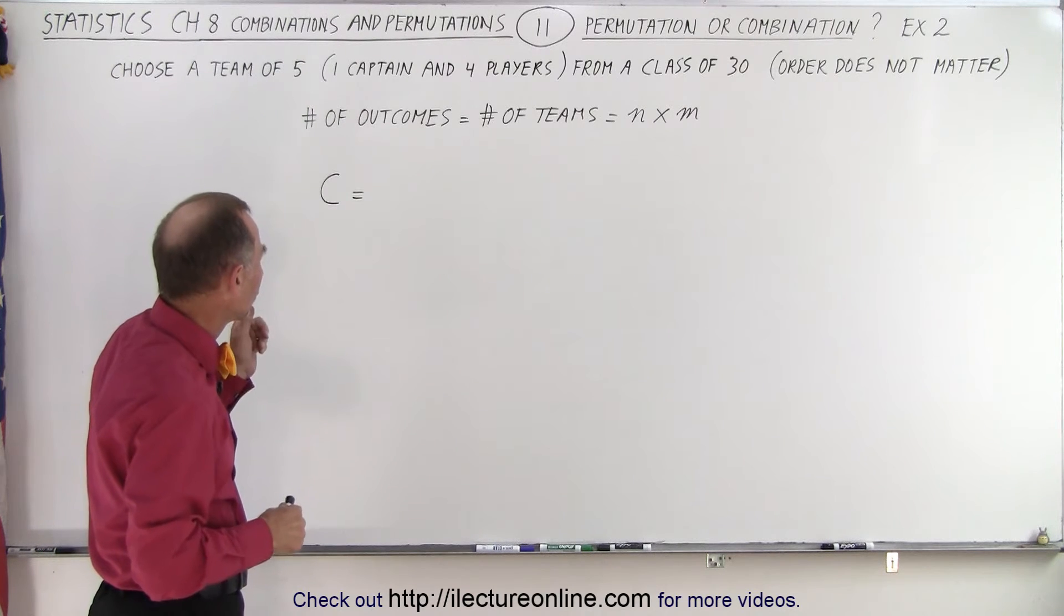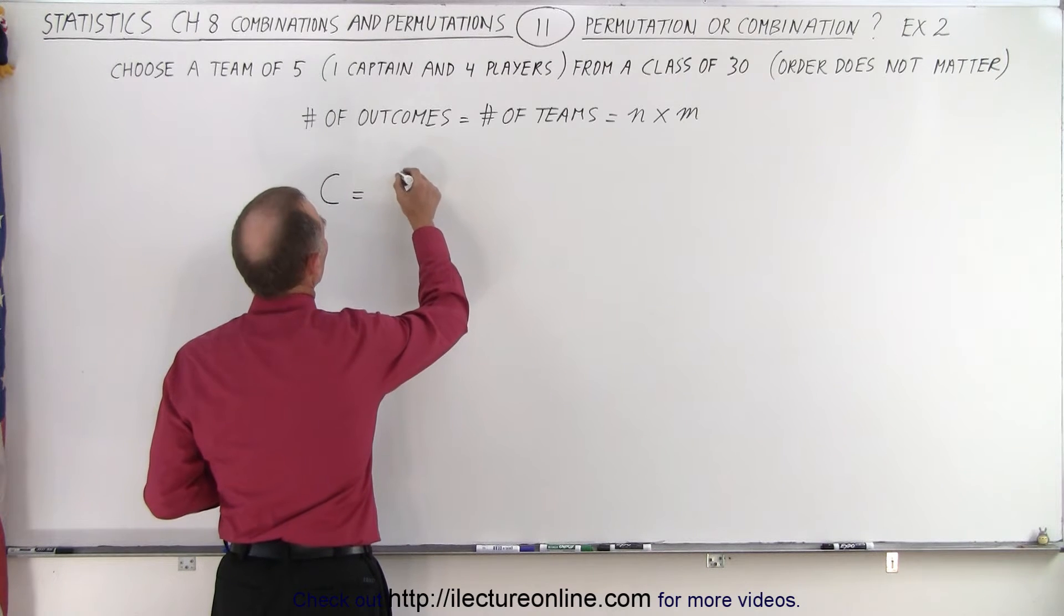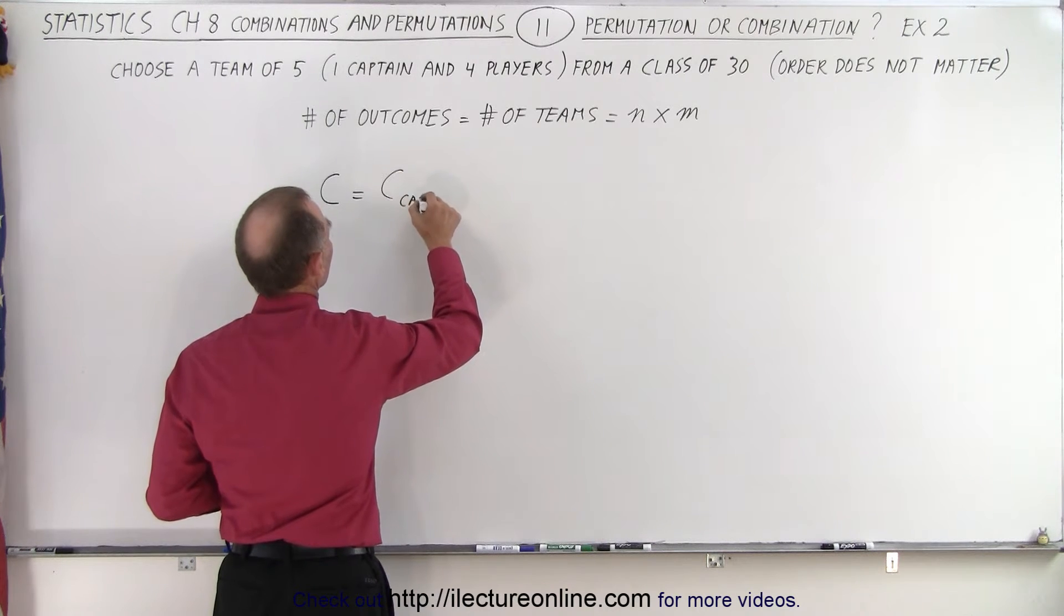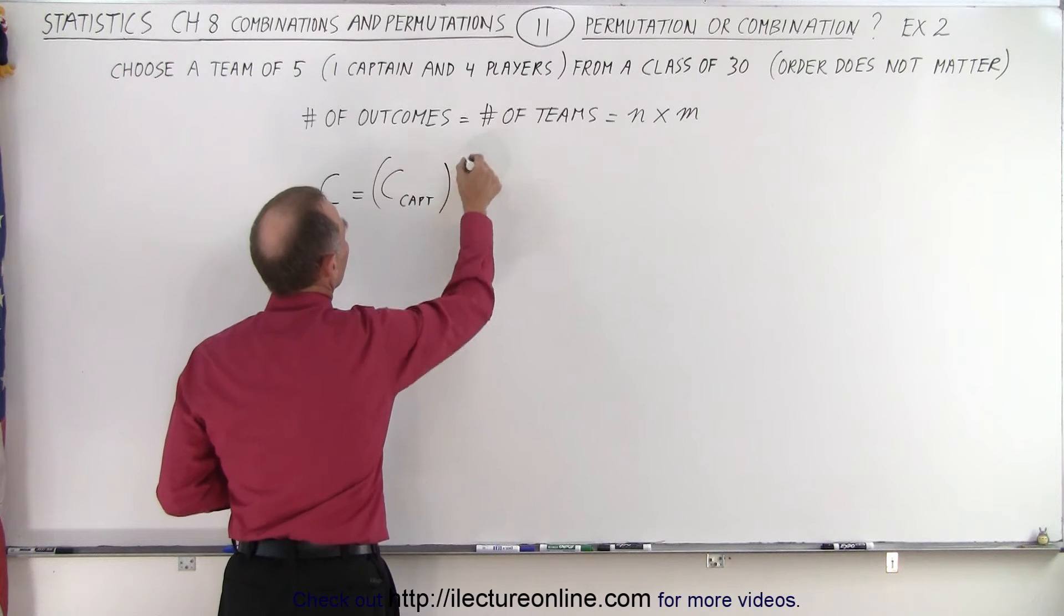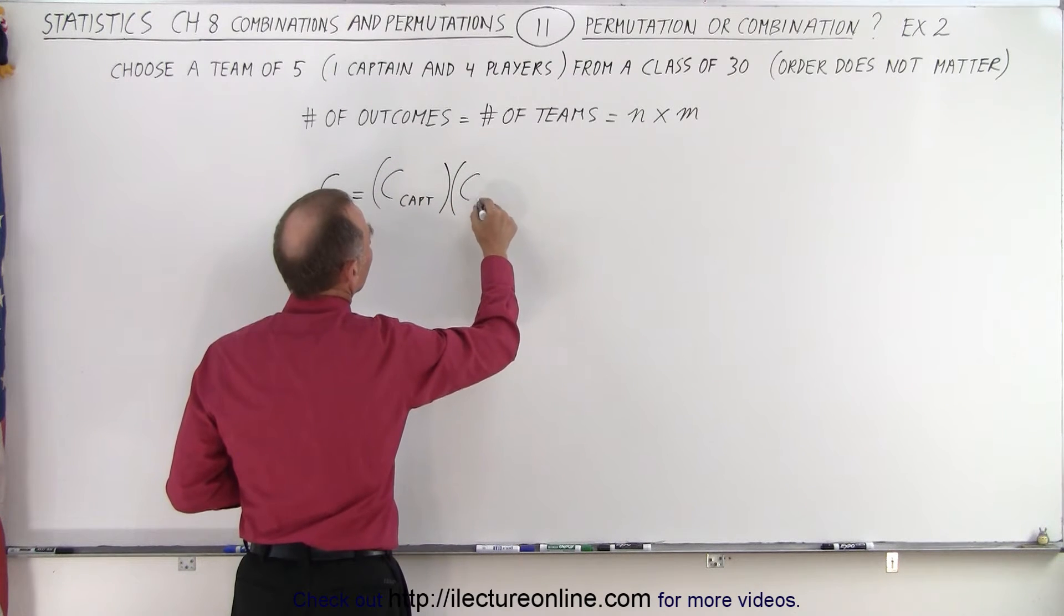All right, so the number of combinations is equal to the number of combinations to pick the captain multiplied times the number of combinations to pick the players.